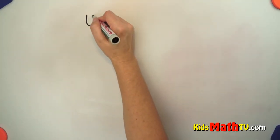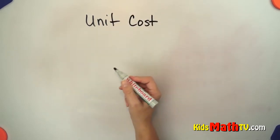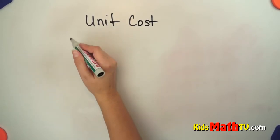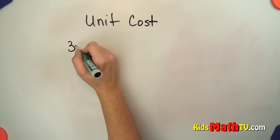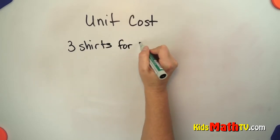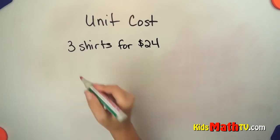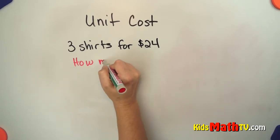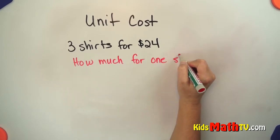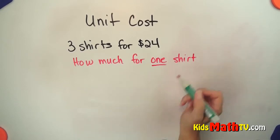In this lesson you will learn about unit cost. Let's say that you go to the store and you notice that there is a sale and you can get three shirts for $24. You want to know how much is each shirt — how much for one shirt. That is the unit. One shirt is a unit. One unit for one shirt.